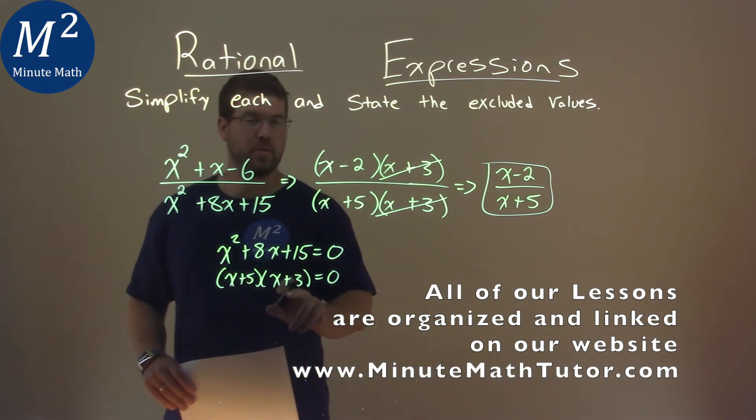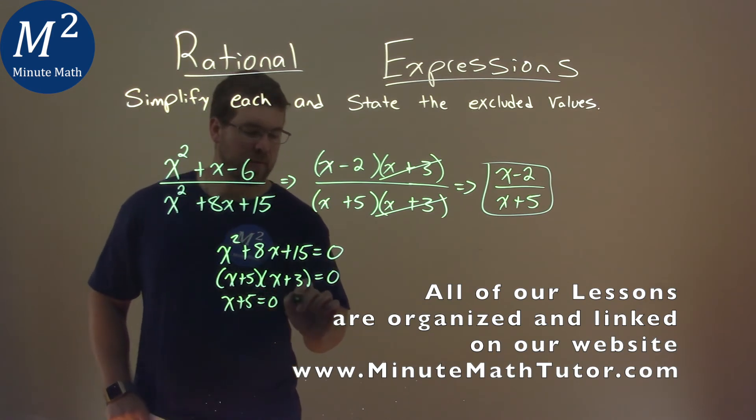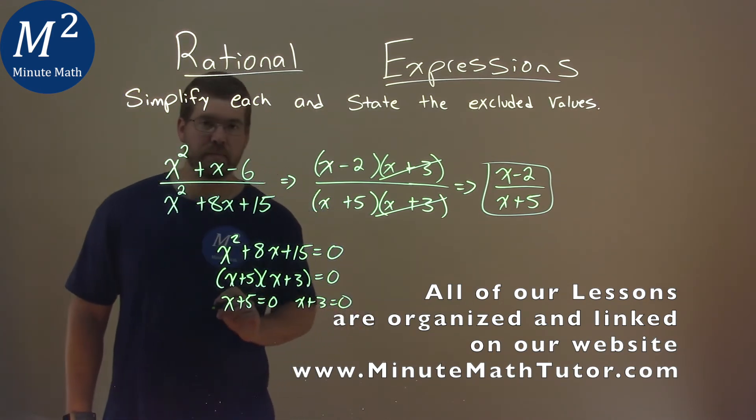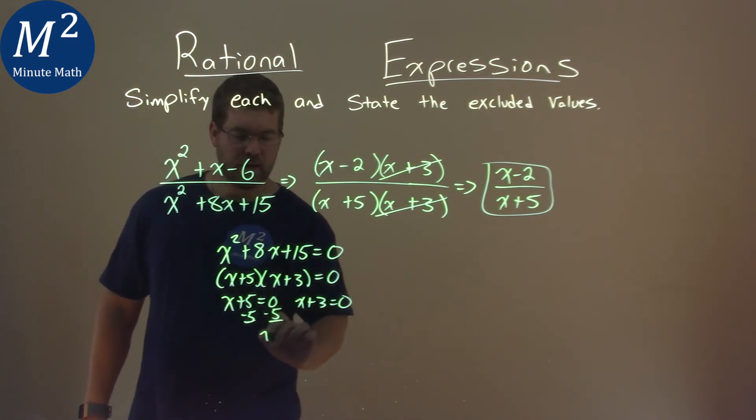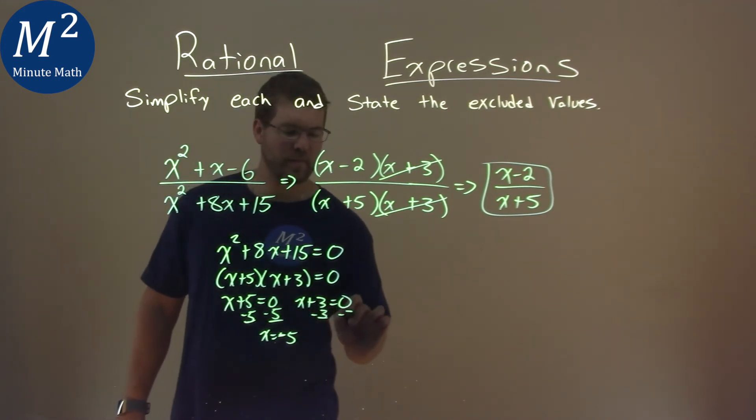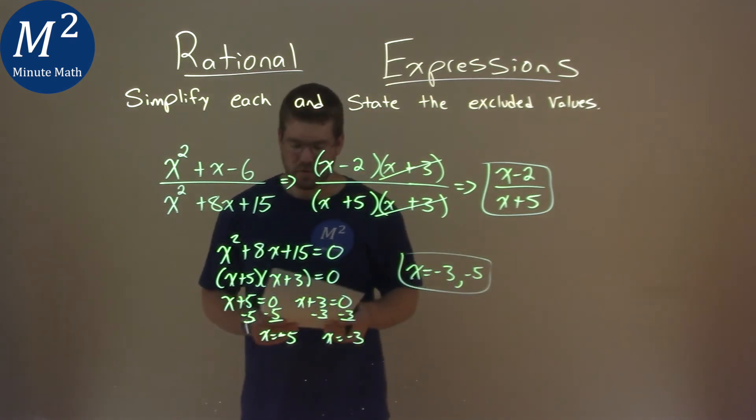We now set both parts equal to 0. x plus 5 equals 0, and then x plus 3 equal to 0. Solve each one, subtract a 5. x equals negative 5. Subtract a 3. And x equals negative 3. So negative 3 and negative 5 are our two excluded values here.